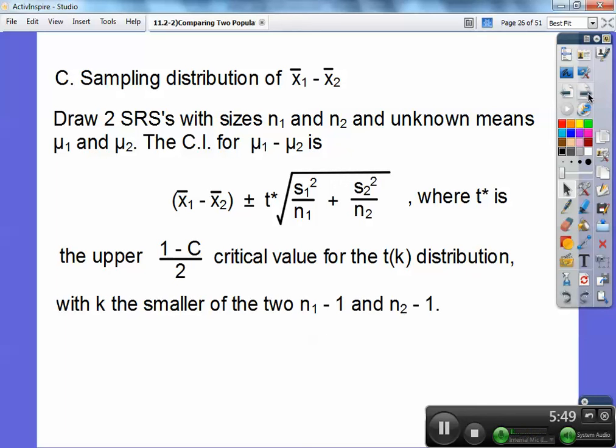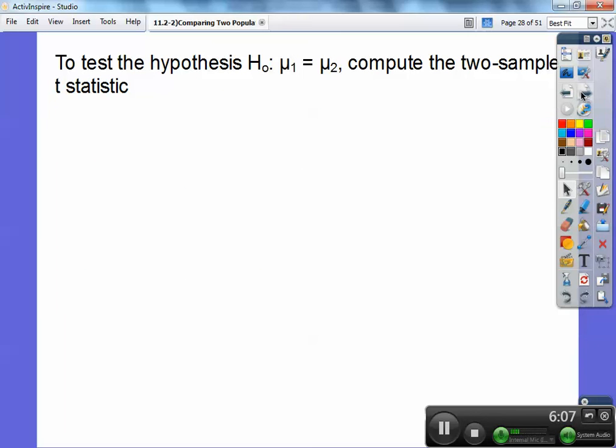We're the upper 1 minus C over 2 critical values for your T distribution with K being the smaller of the 2. So the K is your degrees of freedom. The smaller of the 2 degrees of freedom. So 1 is 10 minus 1 or 9. The other one is 11 minus 1 or 10. We choose the 9 one. We always choose the smaller degrees of freedom.